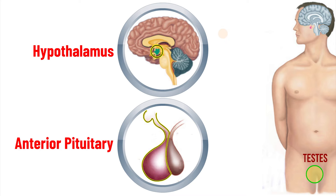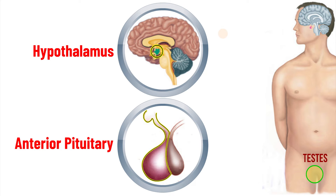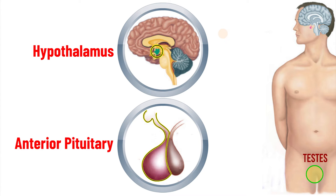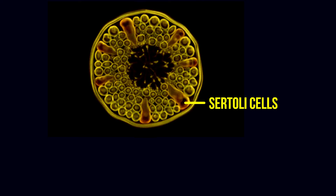FSH from the pituitary stimulates spermatogenesis in the presence of testosterone. High concentration of testosterone is maintained due to the presence of androgen binding protein, which is secreted by the Sertoli cells.